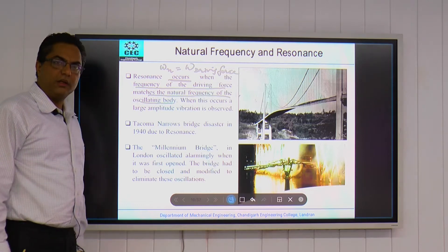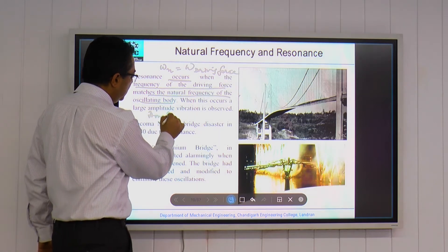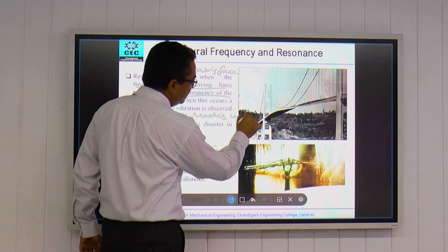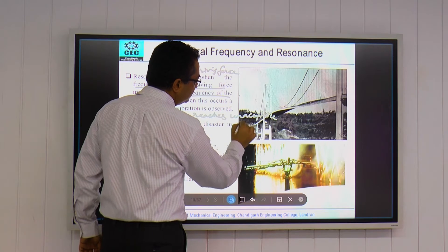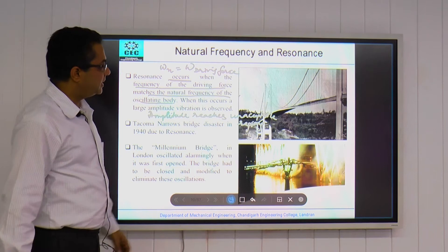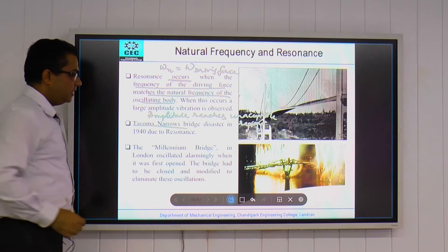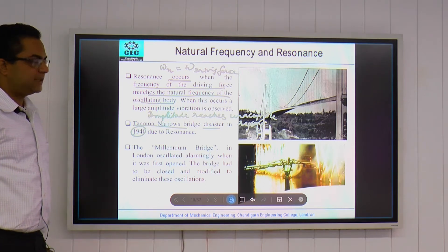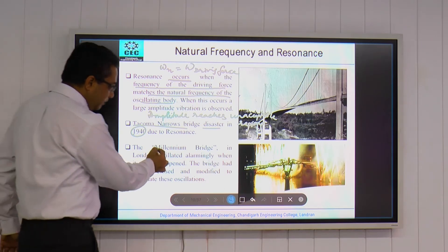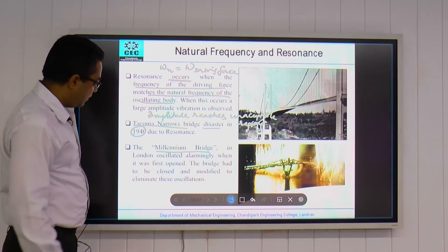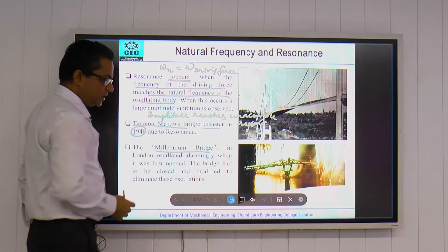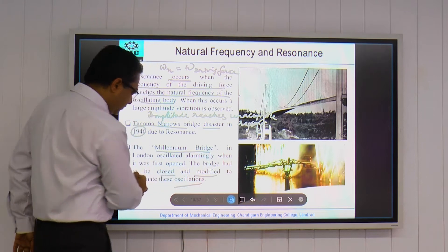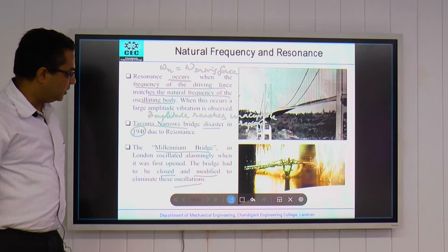When resonance occurs, the amplitude of the vibration reaches unacceptable limits. For example, the Tacoma Narrows Bridge was a disastrous failure observed in 1940, with resonance said to be the main reason. Similarly, the Millennium Bridge is a very popular example quoted everywhere — it was a failure due to oscillations which reached resonance level, and the oscillations had to be controlled in order to save that structure.